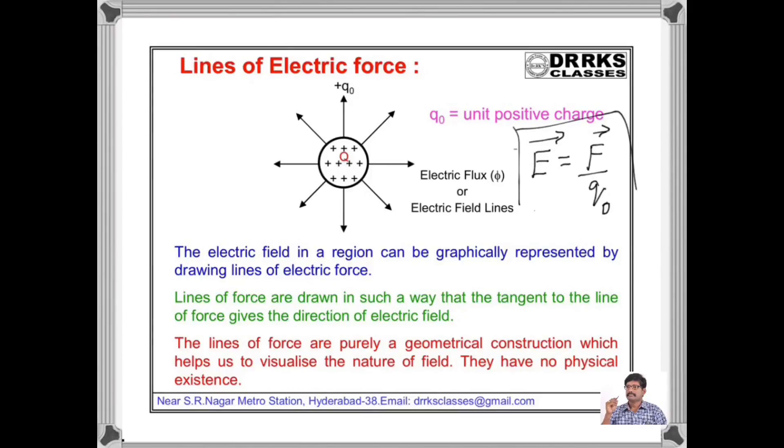We know that the electric field E is equal to the force experienced by the unit positive charge. If a unit positive charge is allowed to move freely, it moves in the direction of resultant electric field. If I place the unit positive charge here it moves radially outwards, similarly here it moves radially outwards.